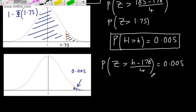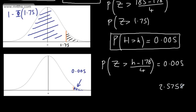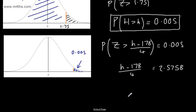So what we can now say is the following. 2.5758 will be equal now to H minus 178 divided by 4. Therefore, just solving for H, nice and straightforward, H will be equal to 4 lots of 2.5758 plus 178.